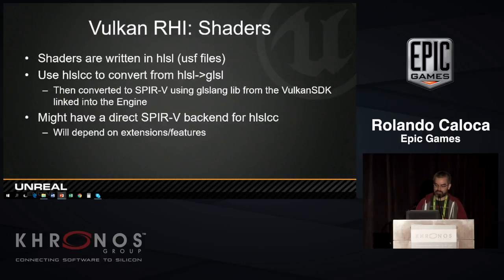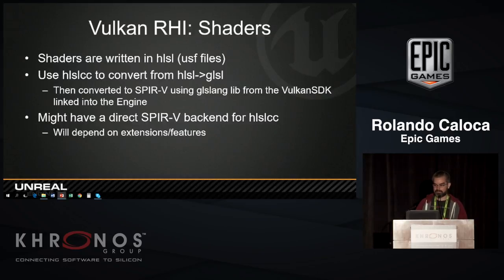A side note on how we do shaders: shaders are written in HLSL — they're called USF files. We have a cross-compiler in the engine based on the Mesa IR that we've been using for a while — that's how we generate Metal and GLSL. Then we convert to SPIR-V using the GLSLang lib from the SDK. We might end up having a direct SPIR-V backend for the cross-compiler, but it depends on how extensions come along.